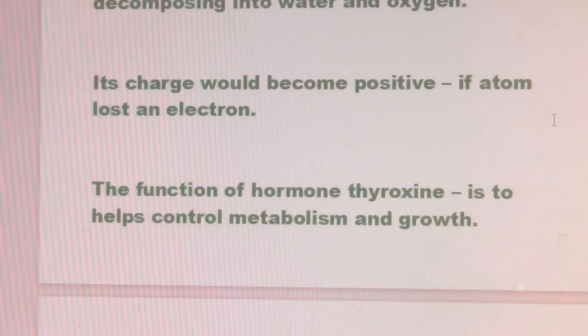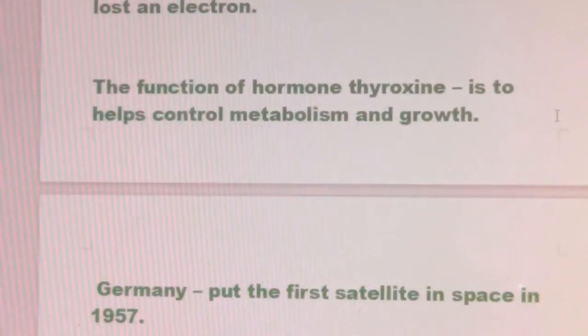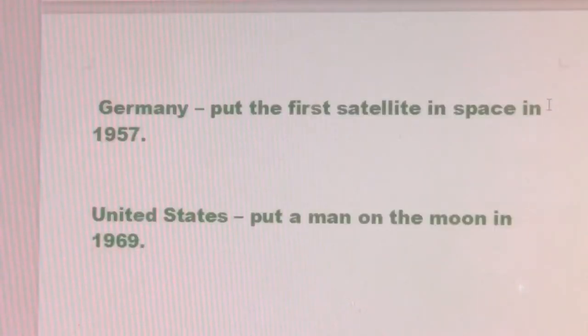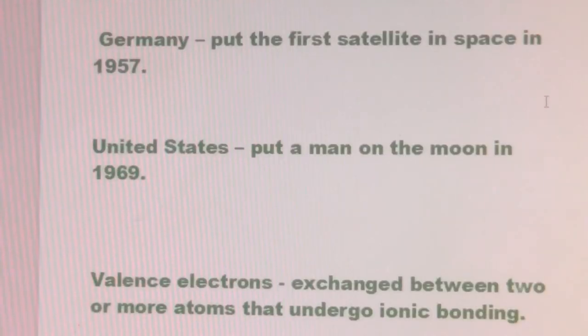The function of hormone thyroxine is to help control metabolism and growth. Germany put the first satellite in space in 1957. The United States put a man on the moon in 1969.